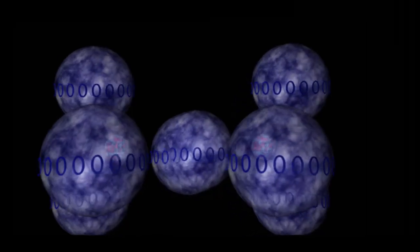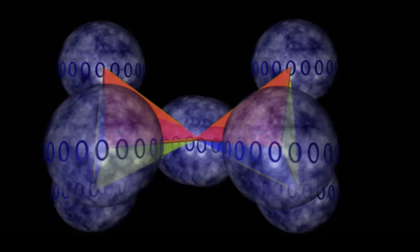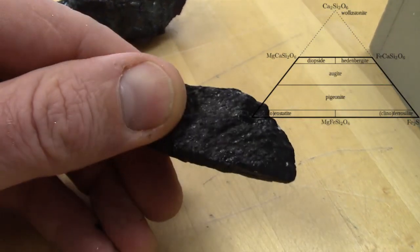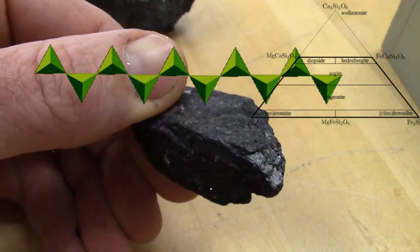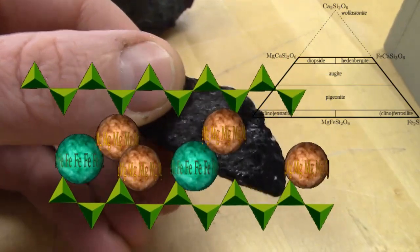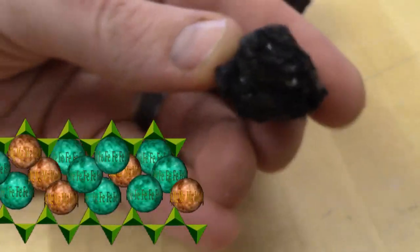The more shared corners, the lower the overall charge imbalance, and the fewer cations needed to balance everything out. Pyroxenes take the first step in this direction, and share a single corner to make silicate tetrahedra single chains. Pyroxene is a dark colored mineral with two directions of cleavage at nearly right angles.